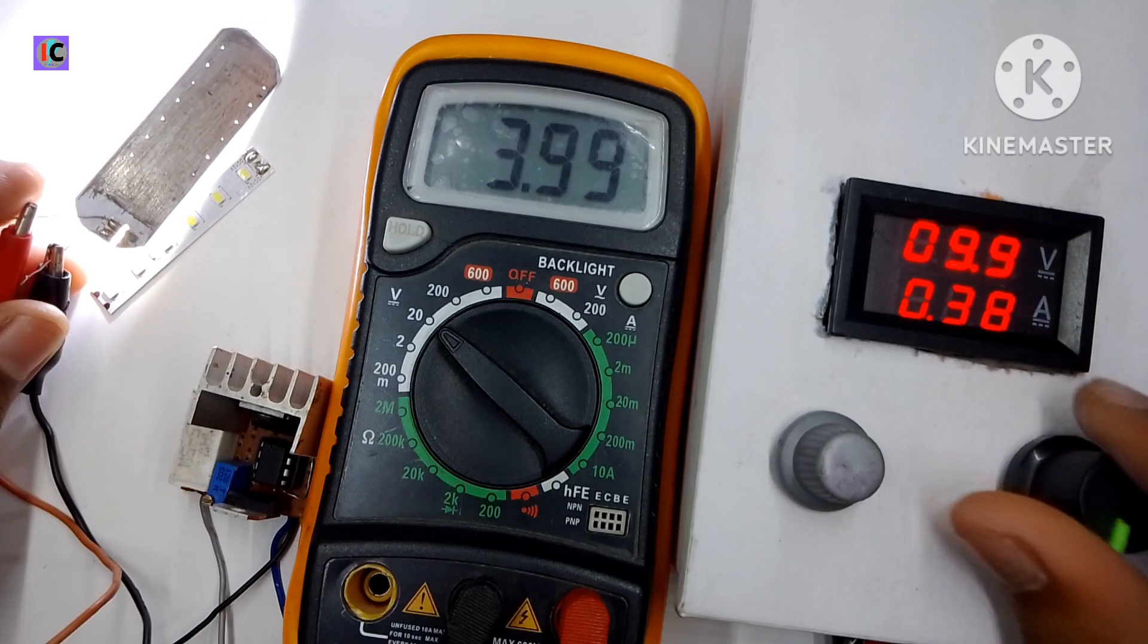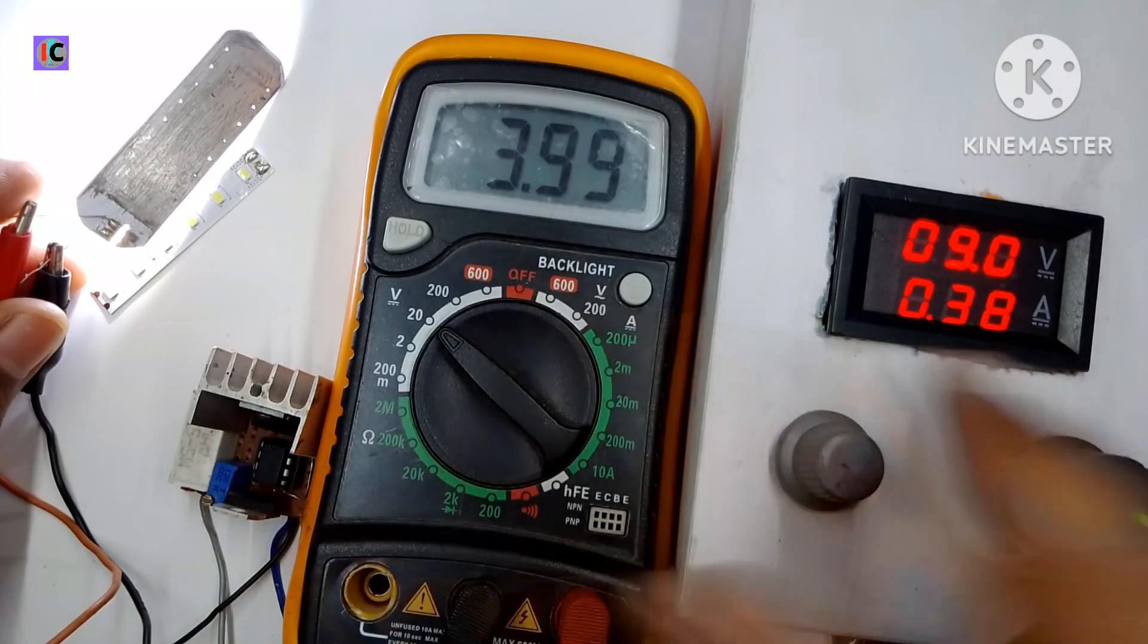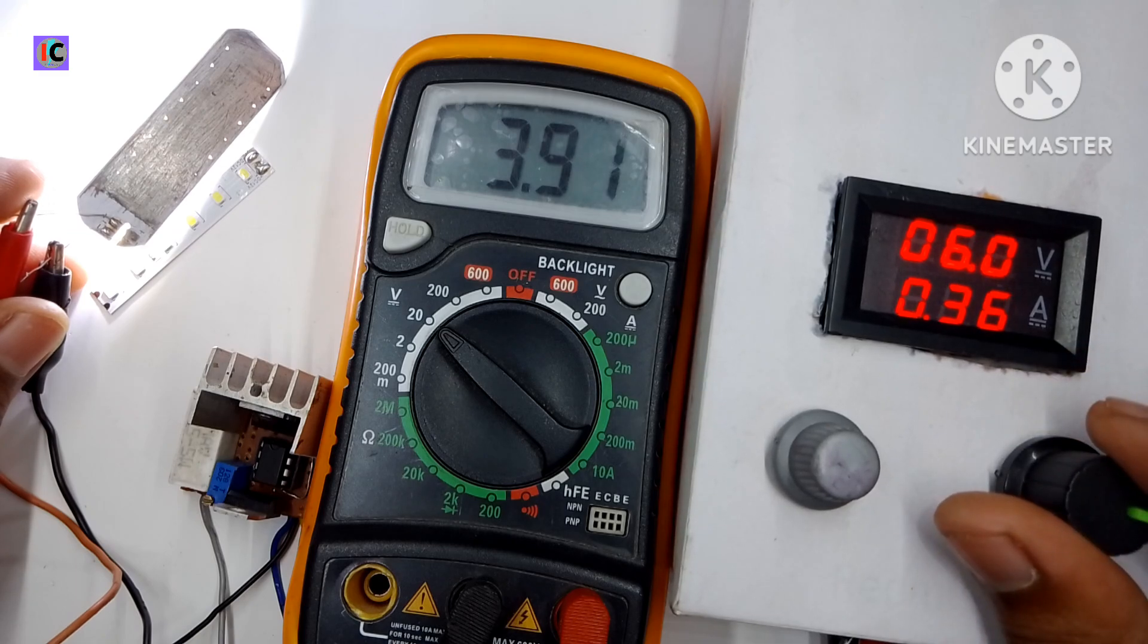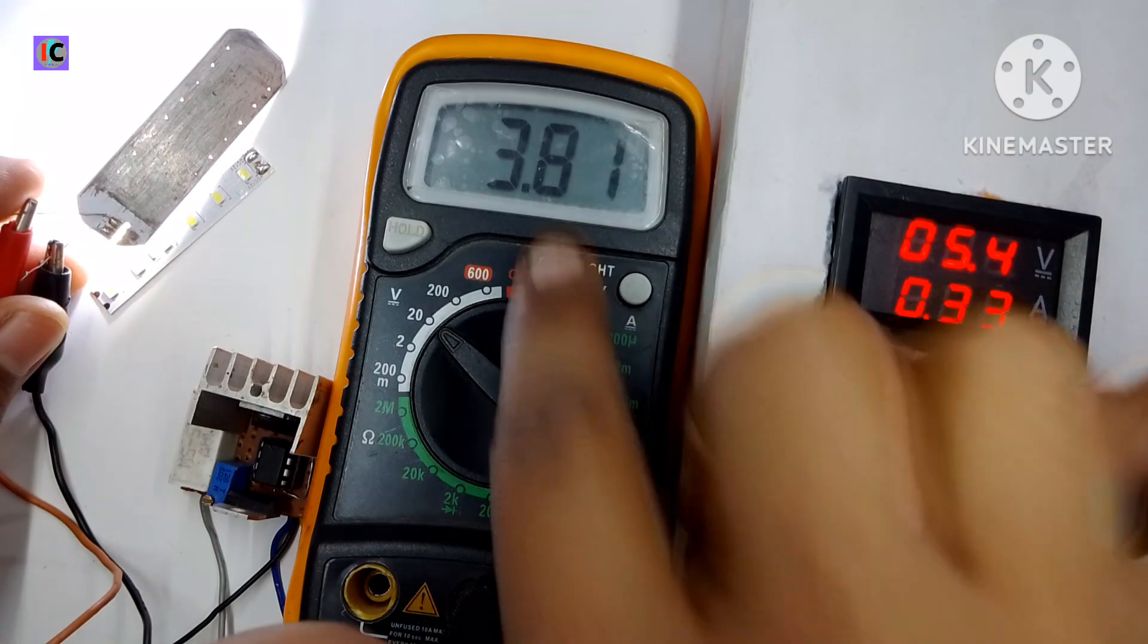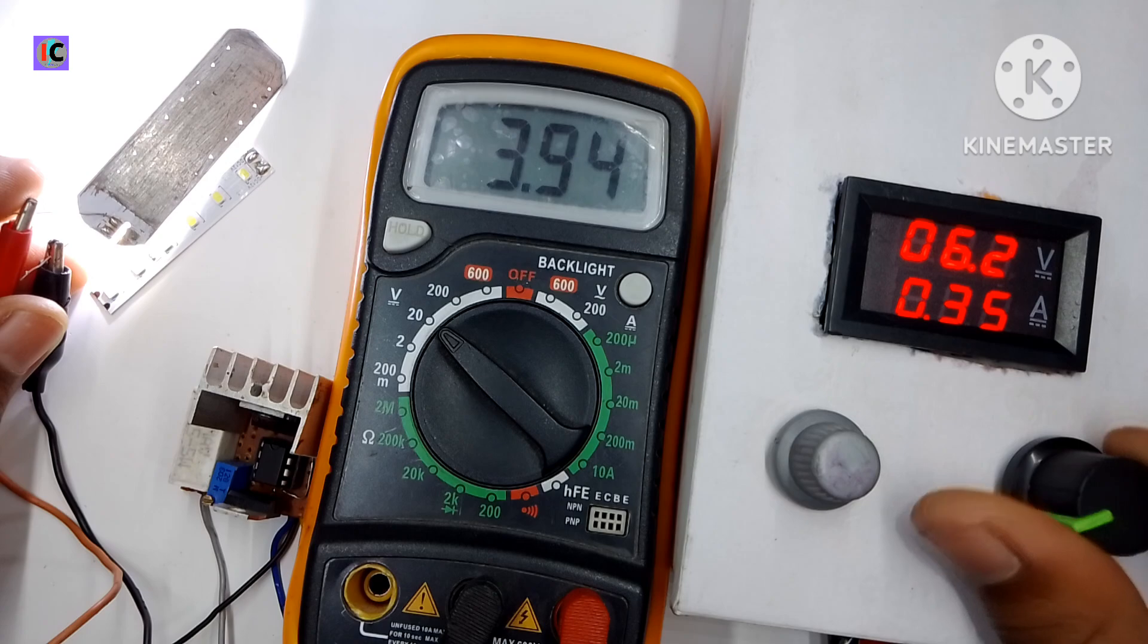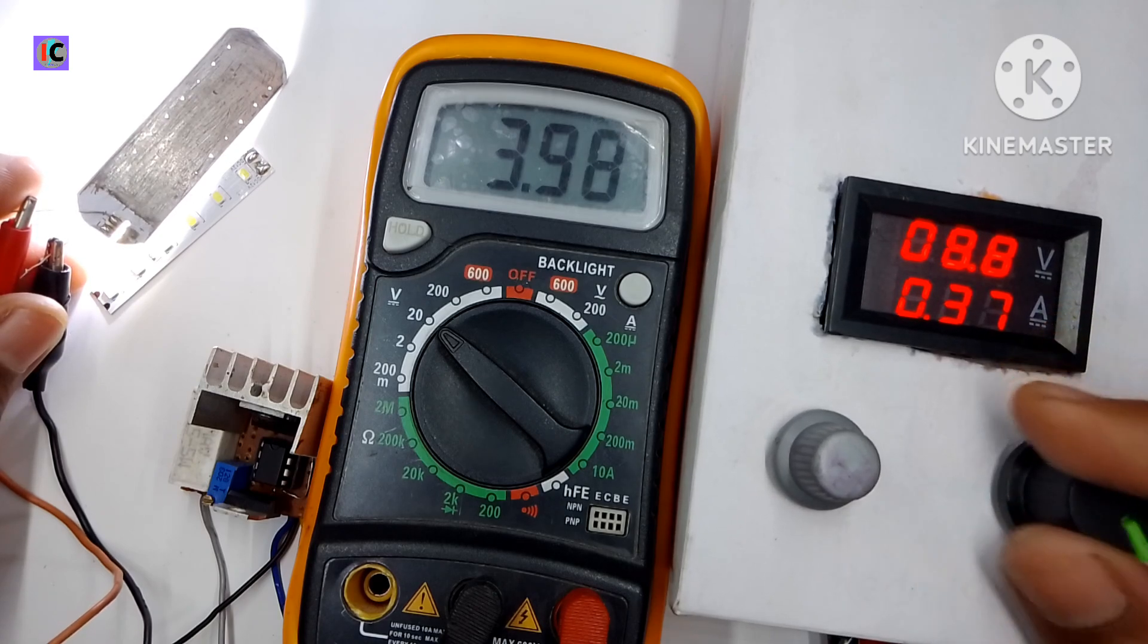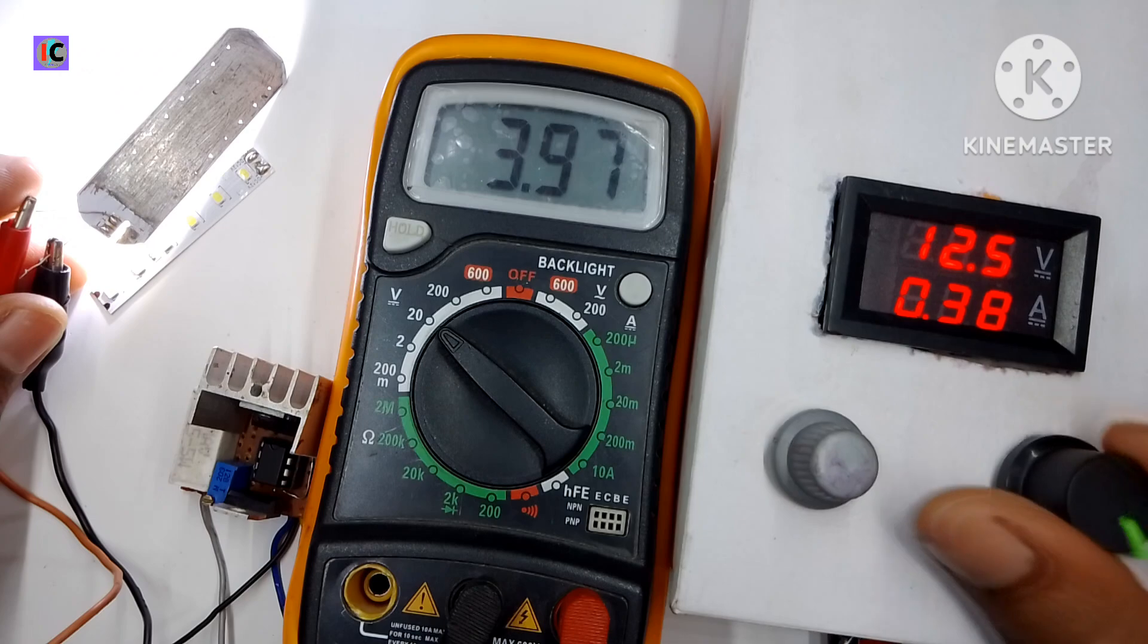Now you can see I'm decreasing the voltage but the output voltage stays stable at almost 4 volts. That's the working of this constant current driver. Now I'm increasing the voltage from my power supply.